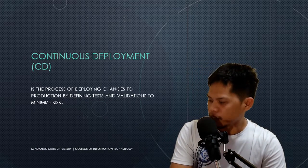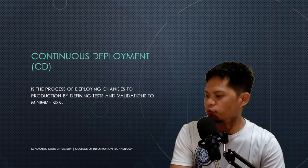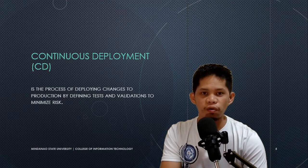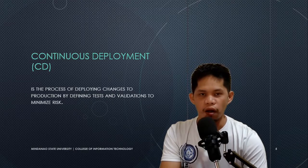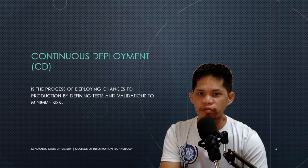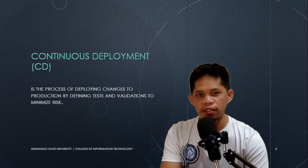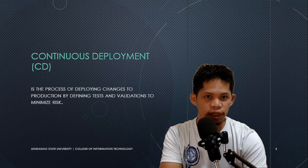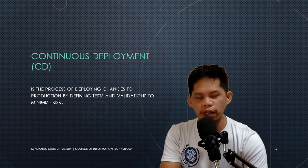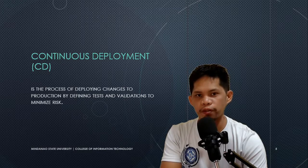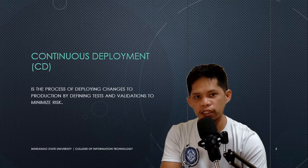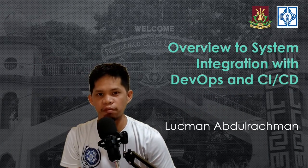Continuous deployment or CD is the process of deploying changes to production by defining tests and validations to minimize risk. Continuous deployment is also known as the continuation of continuous integration, by automating the deployment of the package produced by continuous integration — a package that contains the changes made by developers for a specific task, defect, or feature. The package is automatically deployed to an environment closer to the operation environment, the production environment. The project management can then decide whether to deploy the package to the customer's environment, the operation environment, depending on the results of system testing and validation.